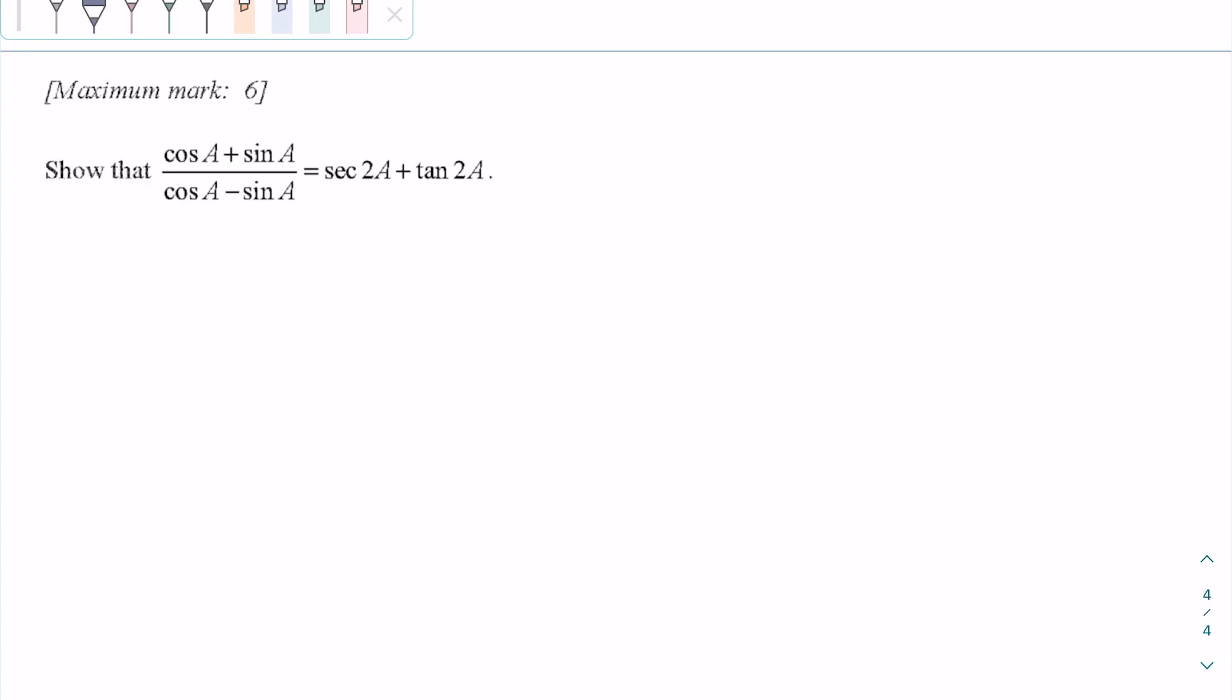In this video, I'll show you how to solve this past exam IB question. Whenever you see a denominator that contains addition or subtraction, what can be helpful to simplify this is to multiply both the numerator and denominator by the conjugate.